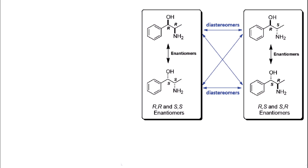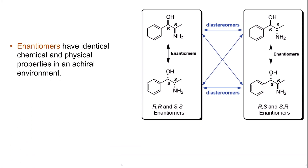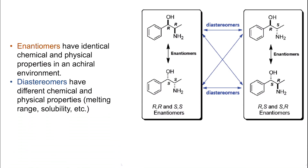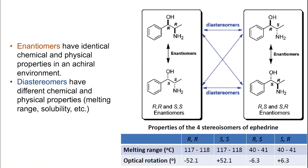So what is the difference between enantiomers and diastereomers? Enantiomers have identical chemical and physical properties in a chiral environment. However, diastereomers have different chemical and physical properties — things like melting point, boiling point, solubility, and so on. These are different.